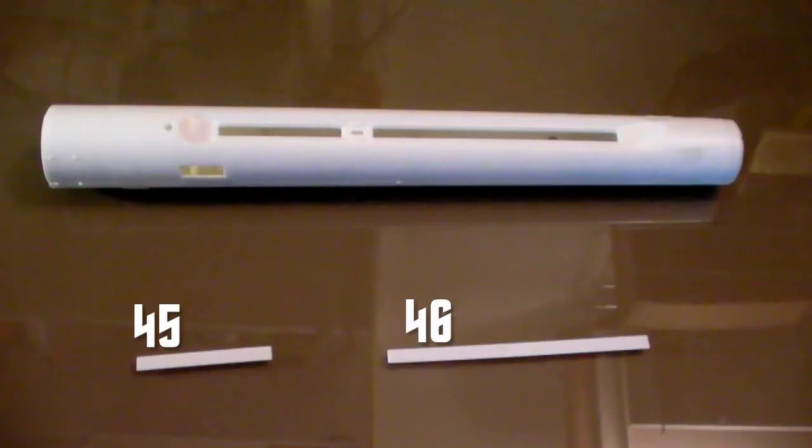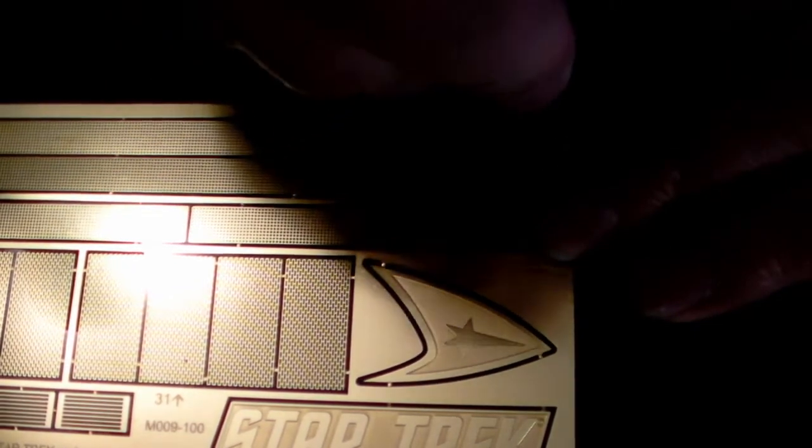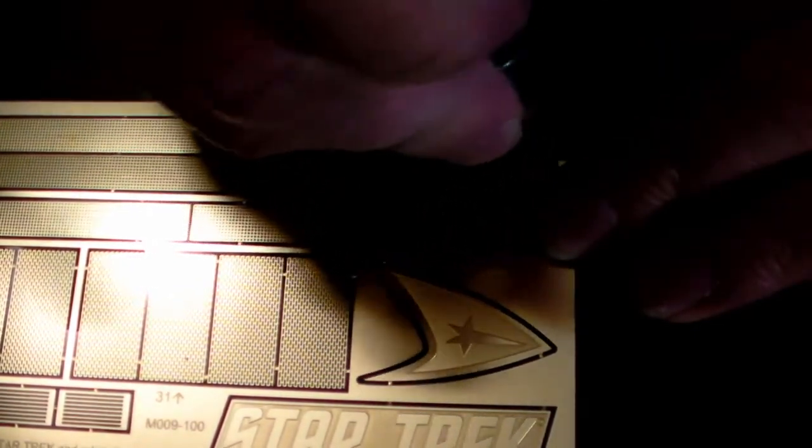The etch parts fit onto kit parts numbers 45 and 46. Cut out the etch parts and file off the extra tab as I detail in many of my other videos.